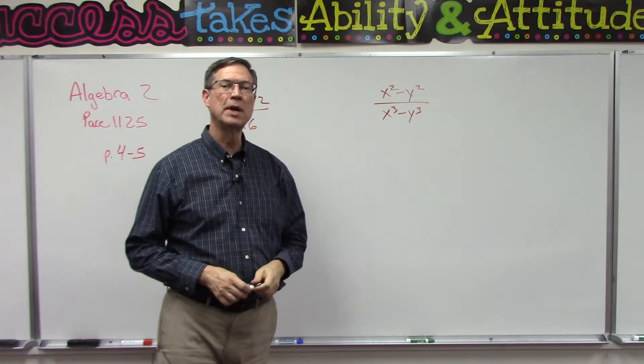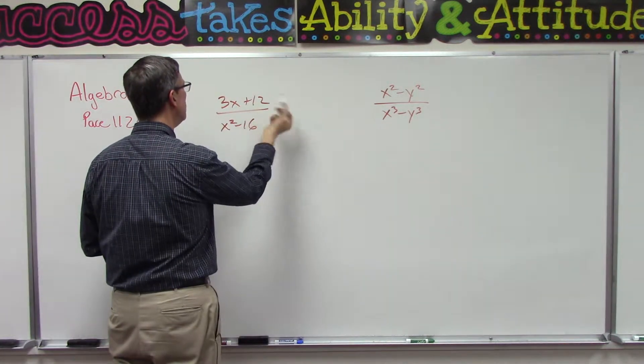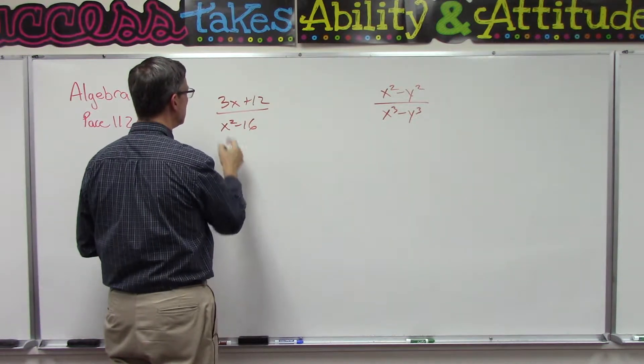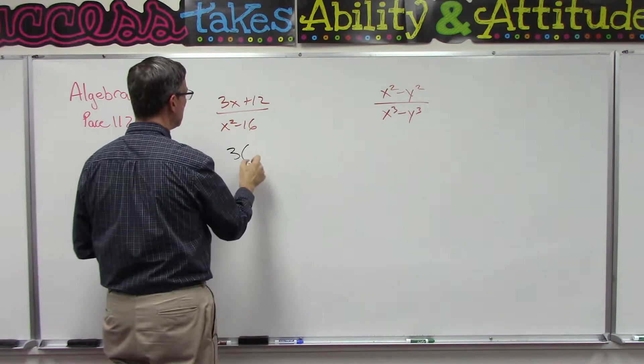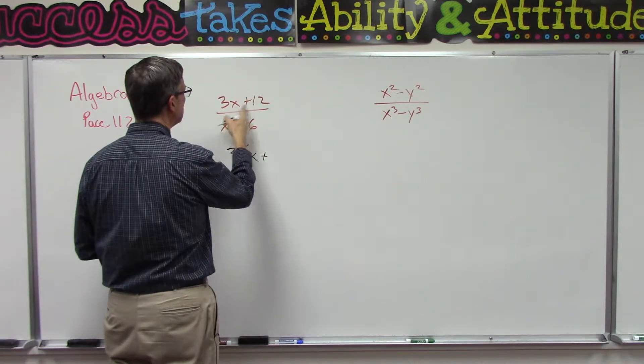So in this numerator I can see, oh yeah, there's a 3 in both of them. So I can factor out the 3 and have 3 times (x + 4).